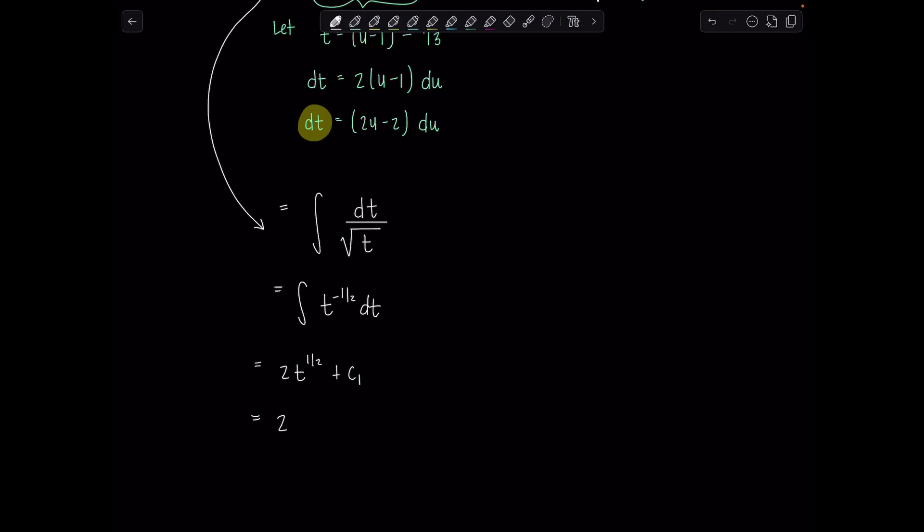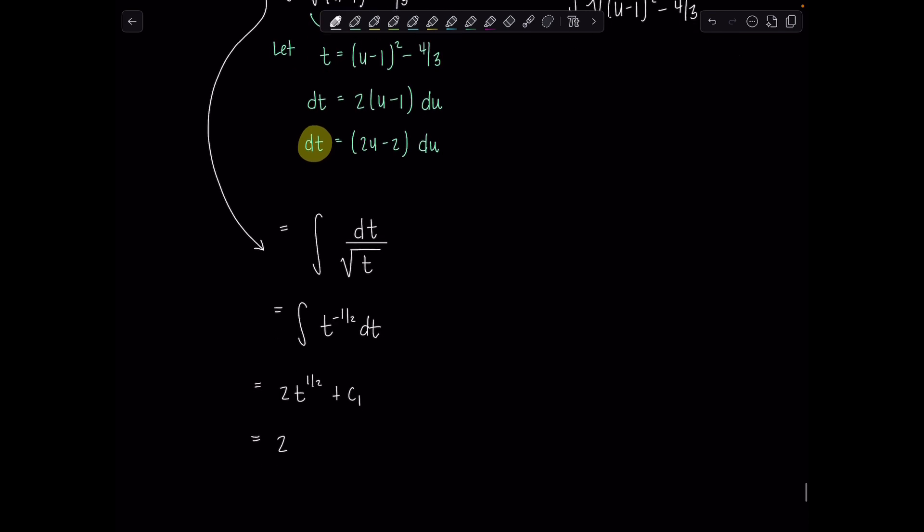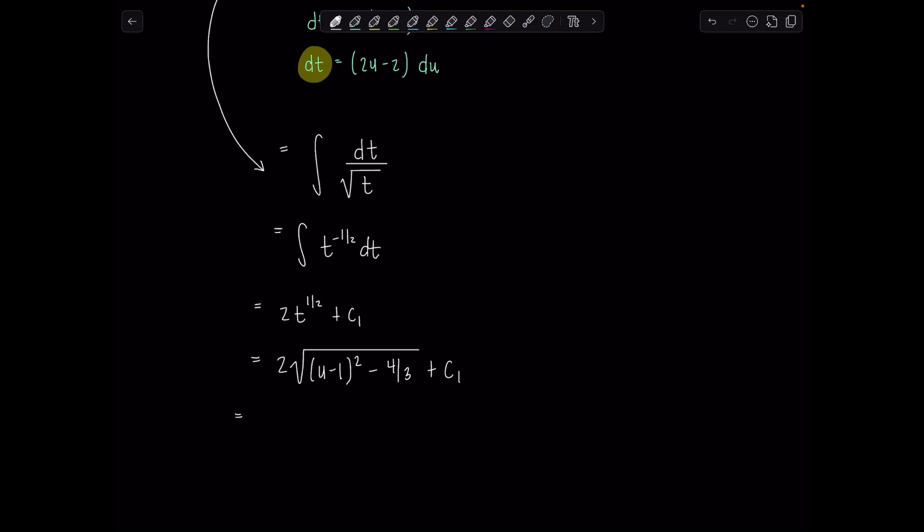I'm going to say plus c1. And then this becomes 2, what was t? u minus 1 squared minus 4 thirds, raised to the one half. So let me put a radical here. u minus 1 squared minus 4 thirds plus c1. And then let me multiply it out how it was in the integral before we completed the square, 2 times the square root u squared minus 2u minus 1 third plus c1. I'll sub back u at the very end. Integral number one is done. That was not bad.